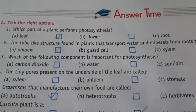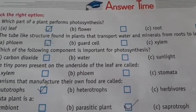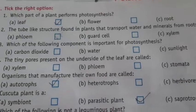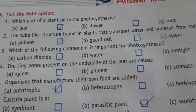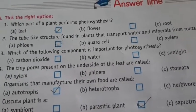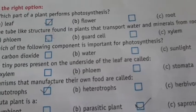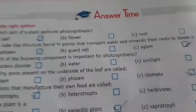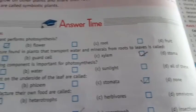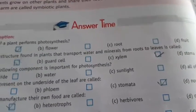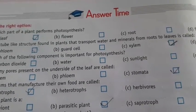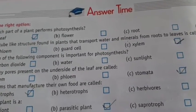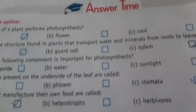Next: the tiny pores present on the underside of the leaf are called what? The options are xylem, phloem, stomata, or none. The tiny pores found in leaves are called stomata, so option number C is the correct answer.